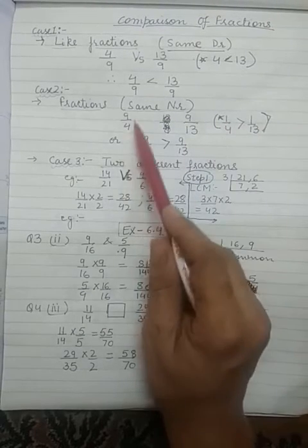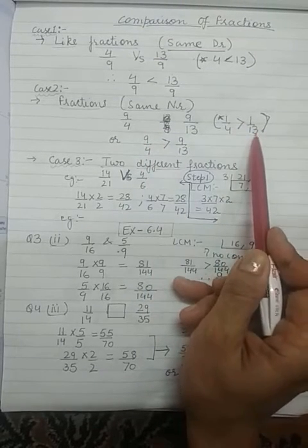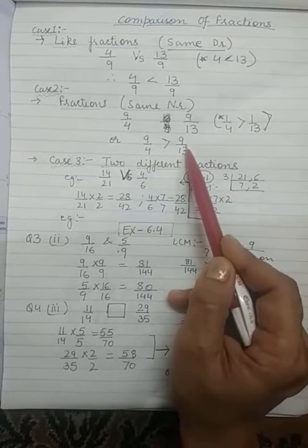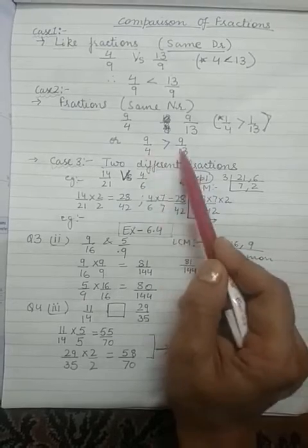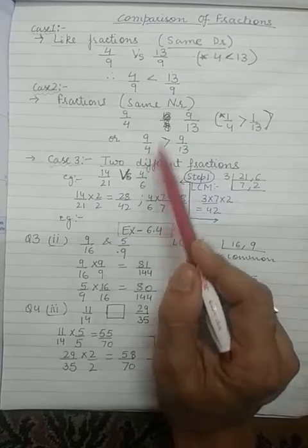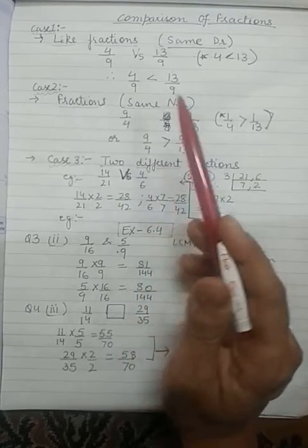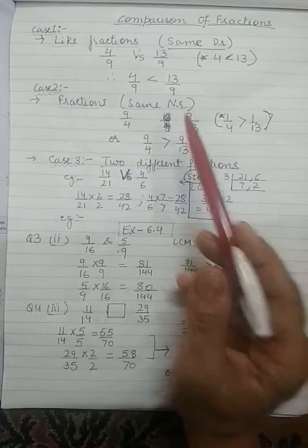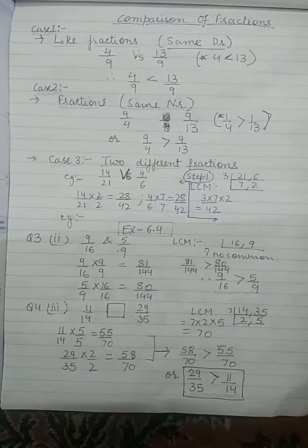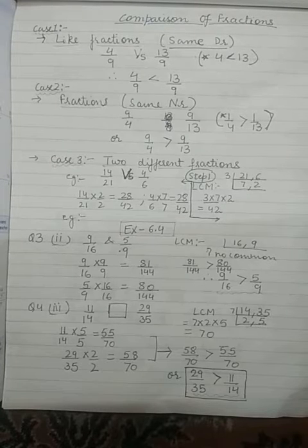Corresponding to this, our fraction is 9 by 4, and corresponding to 1 by 13, the fraction is 9 by 13. When you compare, you will get the result. Case 2 is the reverse of Case 1 — remember this fact. In Case 2 we think the opposite of how we think in Case 1.